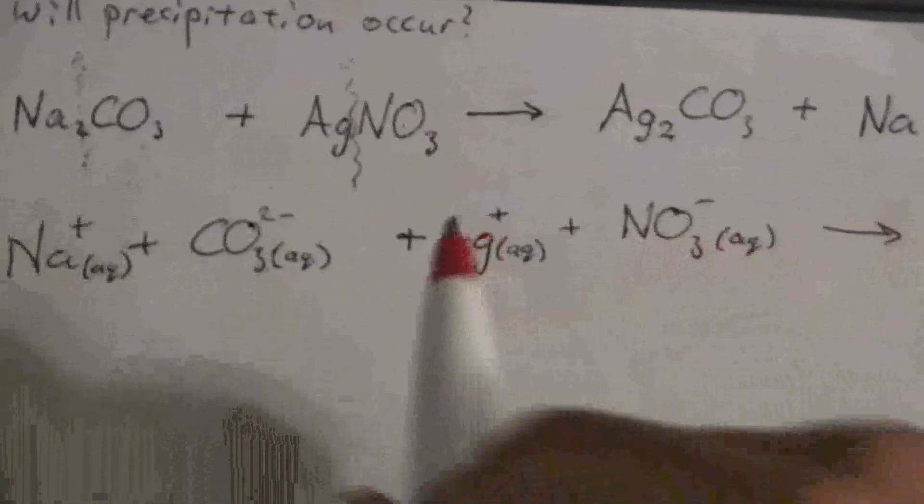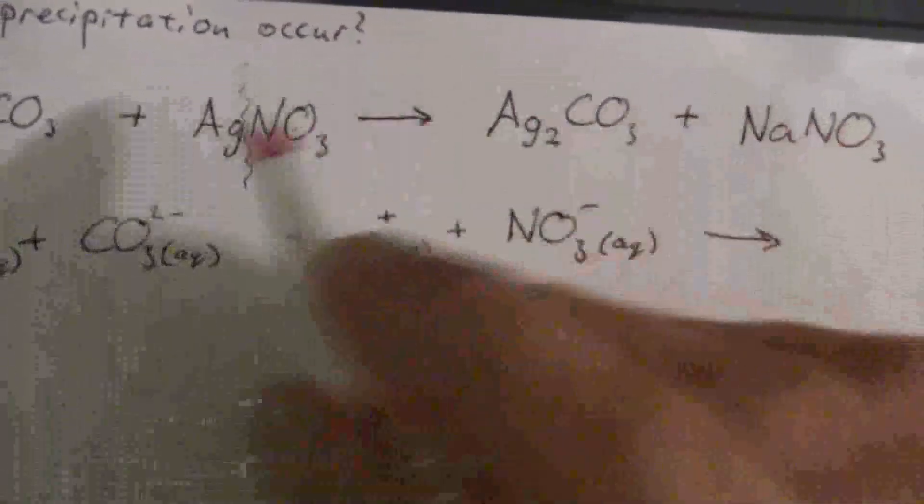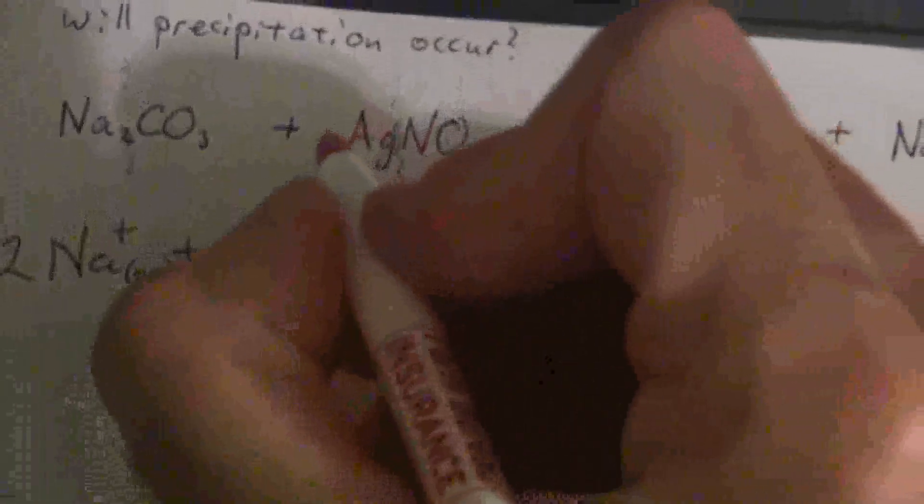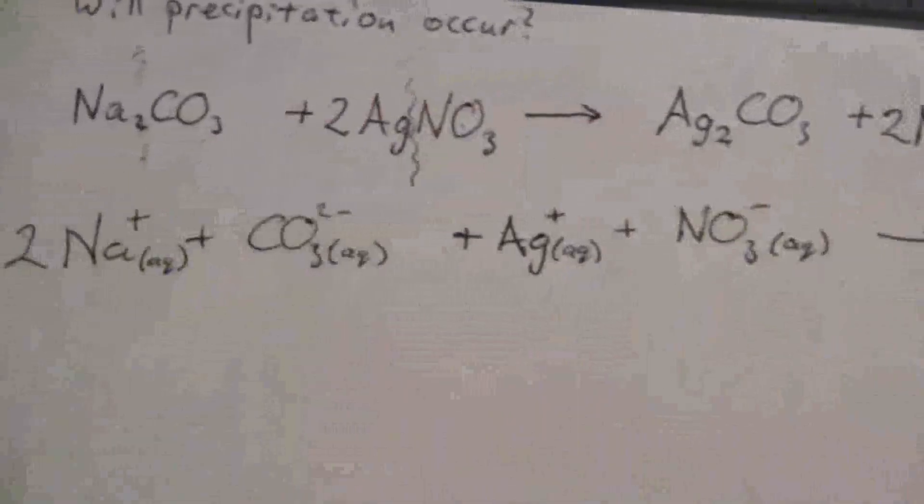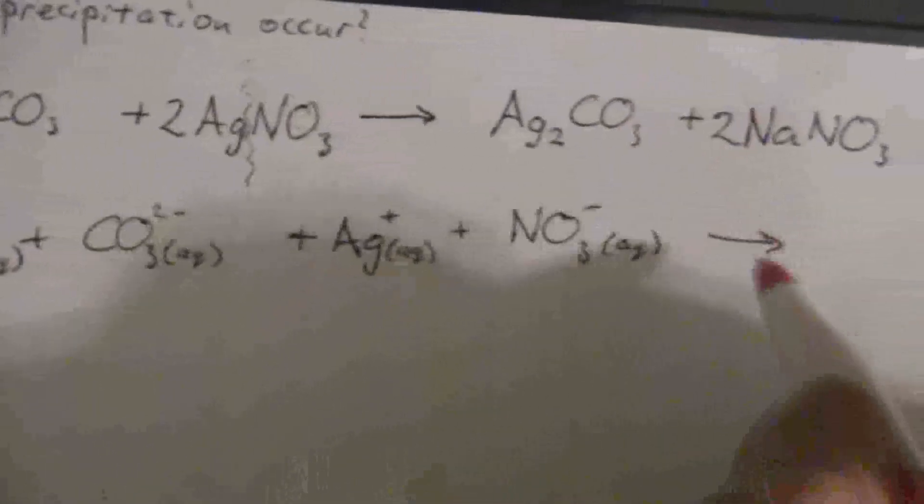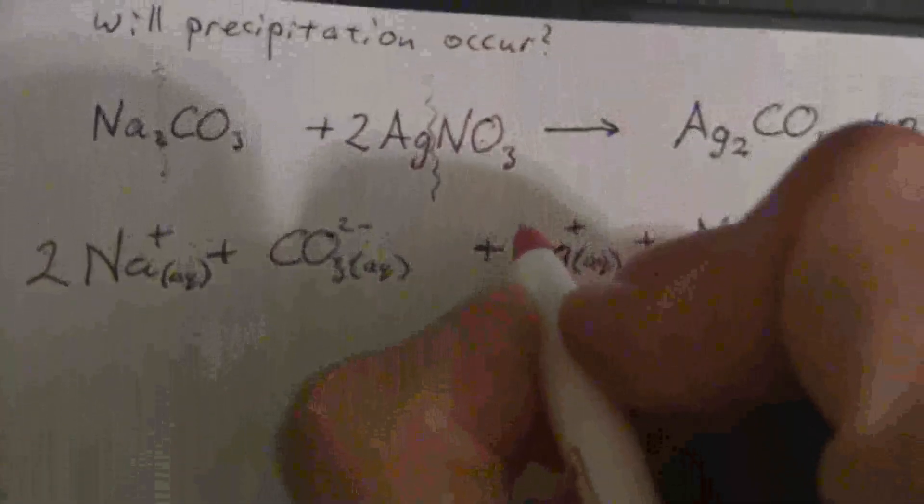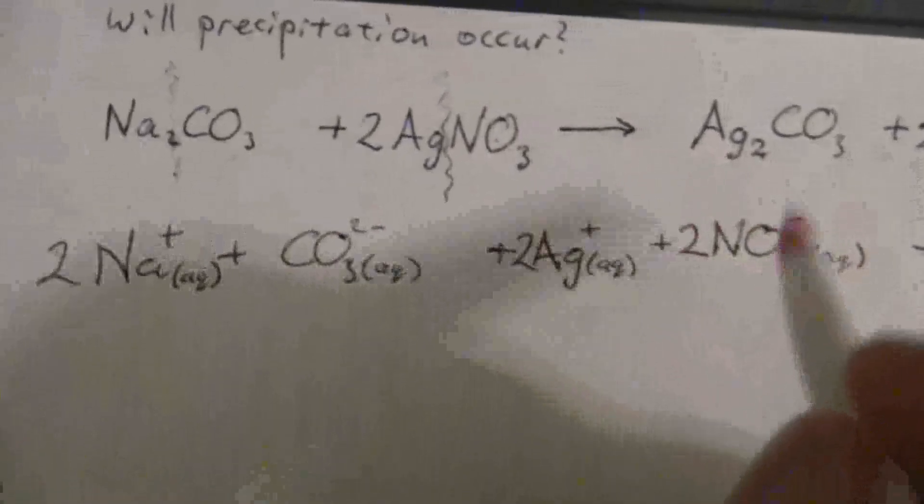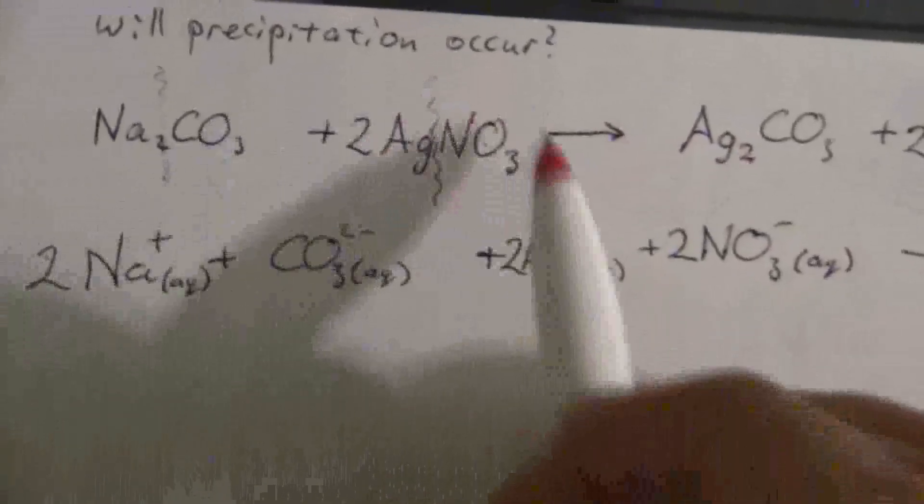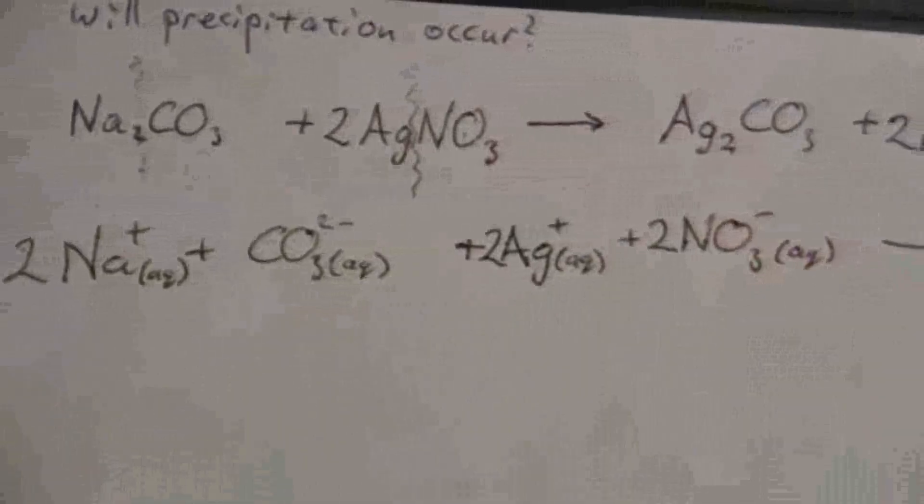So let's go ahead and do the net ionic equation. First, though, we need to balance this overall equation. We have two silver ions, so we need two over there, two sodium ions, so we need two over here. And that gives us the right numbers and everything balances out. Now, since I put a two here, when I'm writing my total ionic equation, I need to carry that out in that equation as well. Both the silver ions and the nitrate ions, because I have two silver nitrate formula units. So when that breaks apart, I have two silver ions and two nitrate ions.